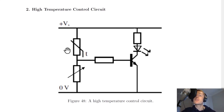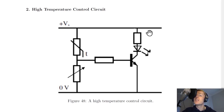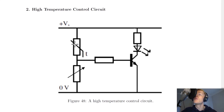To recap: when temperature goes up, the resistance of the thermistor goes down, so the voltage across the thermistor goes down, so the voltage across the variable resistor goes up, which means the voltage across the transistor goes up, which switches it on, which in turn switches on the LED. Working backwards: if the LED is on, the transistor is on, the voltage across the lower component is high, the voltage across the upper thermistor is low, the resistance is low, and therefore the temperature is high.